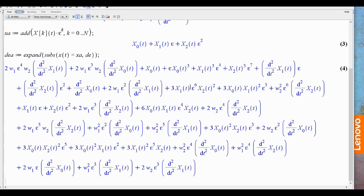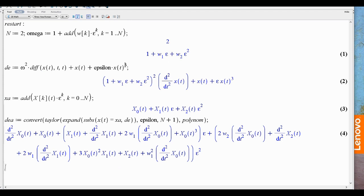So, now I will say d e a is equal to expand substitute x of t equals x a in d e because this will be a long expression. I do not want to keep all these higher order terms so what I will do here is convert Taylor and then over here I will write epsilon n plus 1 polynomial. So, now you see here is the unperturbed part and this is the order epsilon part and this is the order epsilon square part and over here you will find omega 1 appears which will be solved for at this order and over here omega 2 appears and it will be solved for at this order second order and so on.